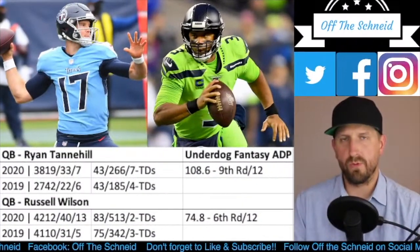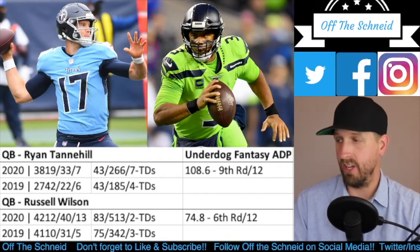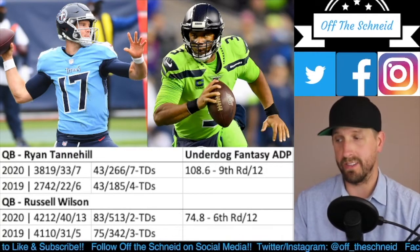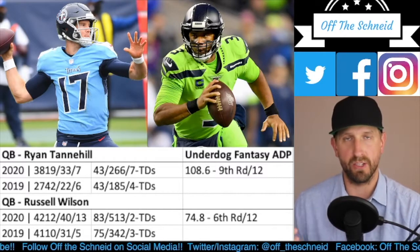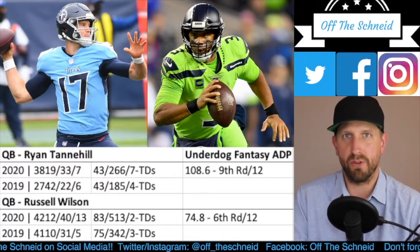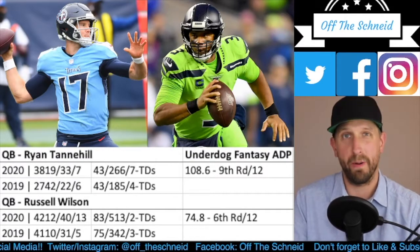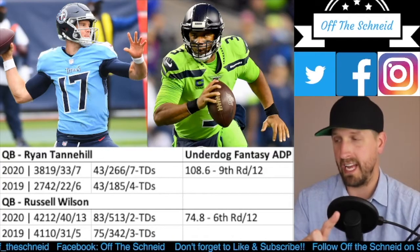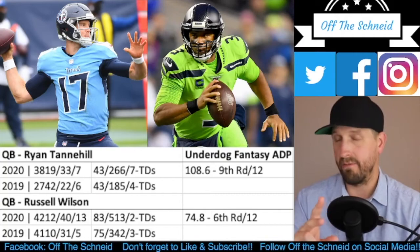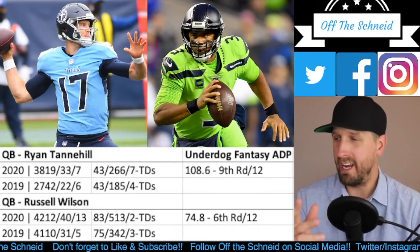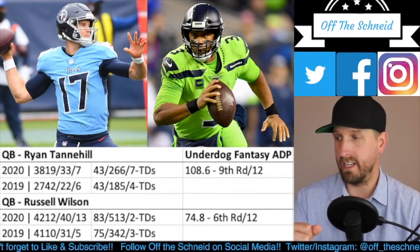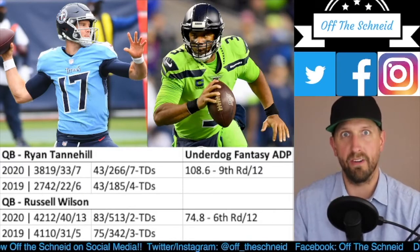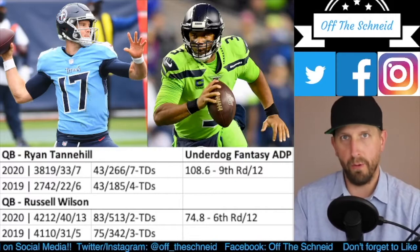Last comparison: quarterbacks — Ryan Tannehill over Russell Wilson. That's three full rounds separating them. I'm a massive fan of Russell Wilson, but it doesn't make sense to reach 34 picks earlier for him over Tannehill. Looking at total touchdowns: Tannehill had 33 passing and 7 rushing for 40 total; Wilson had 40 passing and 2 rushing, also 40 total — a difference of two touchdowns. In best ball, passing TDs are only worth 4 points while rushing TDs are worth 6, so Tannehill is actually head and shoulders better in terms of fantasy points.